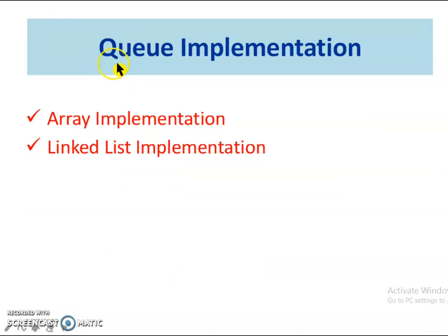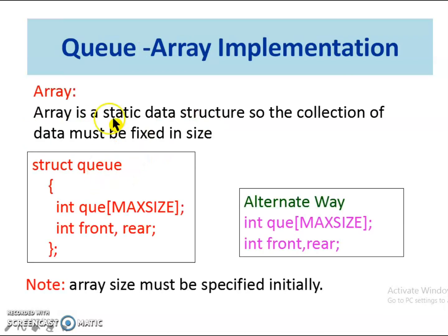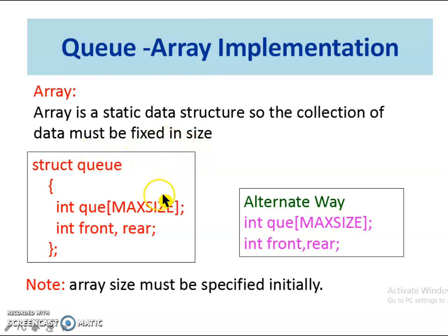Next, let us see the implementation of the queue. Queue can be implemented either as an array-based or linked list-based implementation. In the array implementation, an array is a static data structure, so the collection of data must be fixed in size, and the array size must be specified initially.